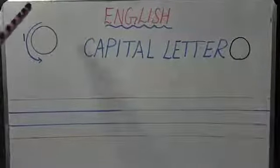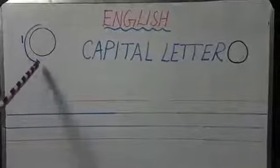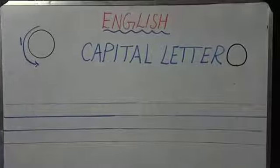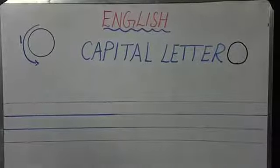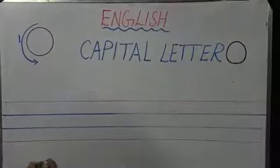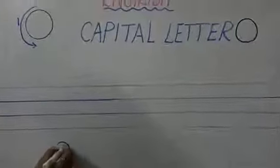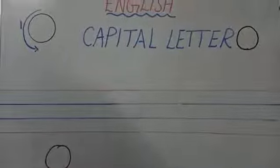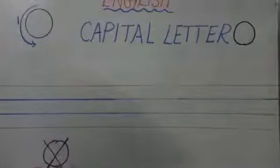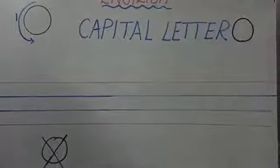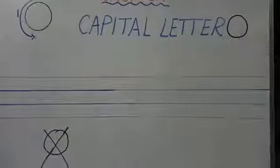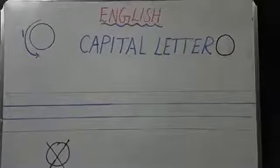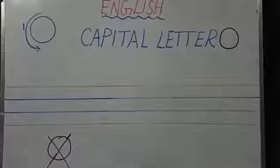This is called clockwise direction. Always O should be written in clockwise direction. If you are going towards your right — that is wrong. This should not be done. You are going to write the capital letter O towards your left.